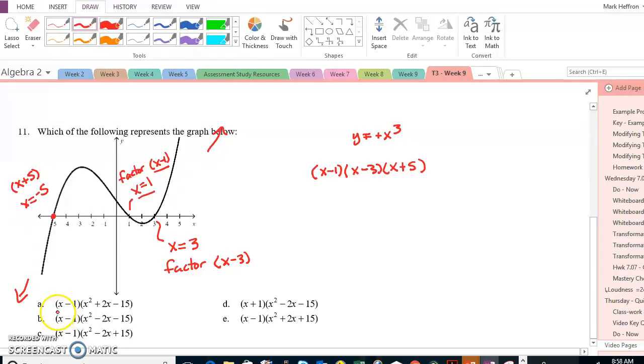And since all of these have x minus 1 or x plus 1, I can rule out anything that has x plus 1. And the other ones, I just need to multiply these back together.